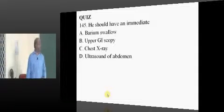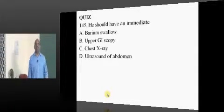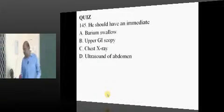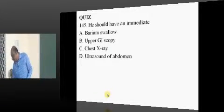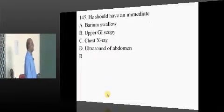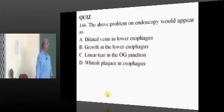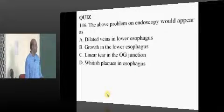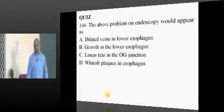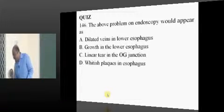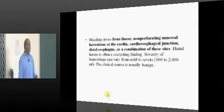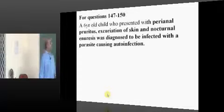What is the immediate investigation you want to do? Upper GI endoscopy. If you know the diagnosis, you know the investigation. On endoscopy, what do you see? A linear tear at the esophago-gastric junction. If you know the fundamentals, everything else will follow correctly.